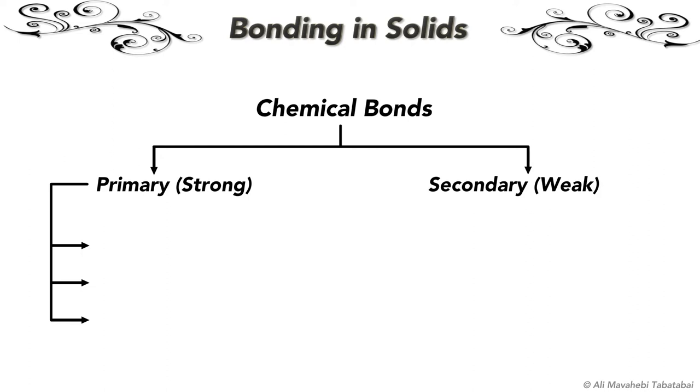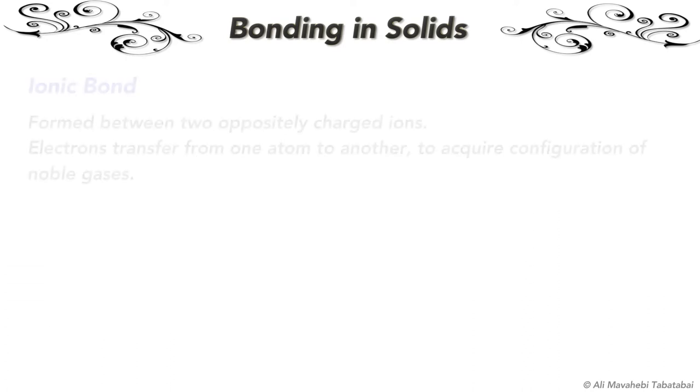Three important primary bonds that are important for our study of analog electronics are discussed in this video. These are ionic bonds, covalent bonds, and metallic bonds.